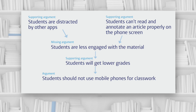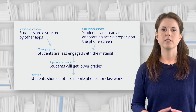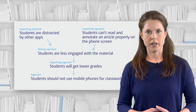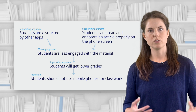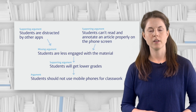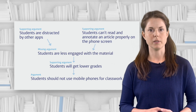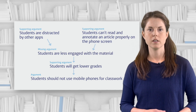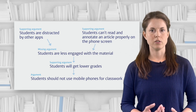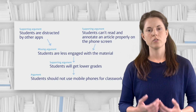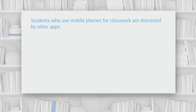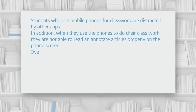What could be a good counter-argument here? A good place to start is to look at the main point that you're trying to make — that students should not use mobile phones for classwork — and try to gather together some points for and against this statement. So we've got reasons why they shouldn't be used for classwork: students are distracted by other apps; students are not able to read and annotate an article properly on a phone screen; and therefore, students are less engaged and get lower grades.